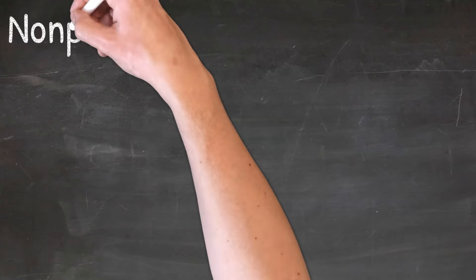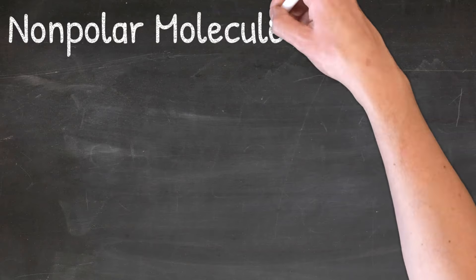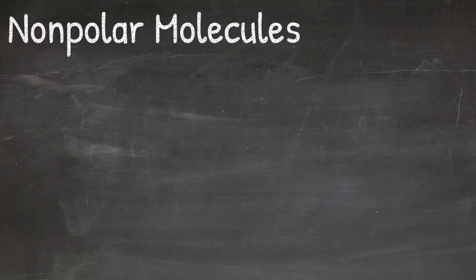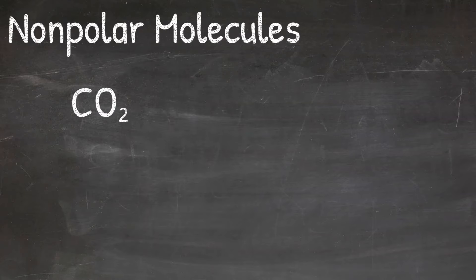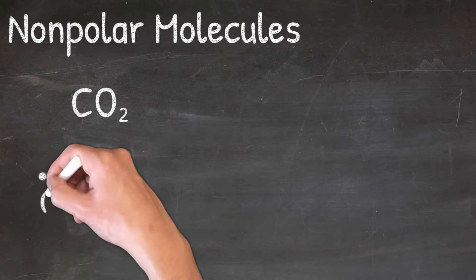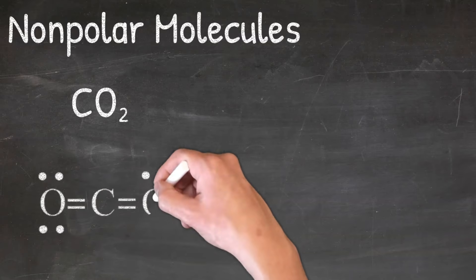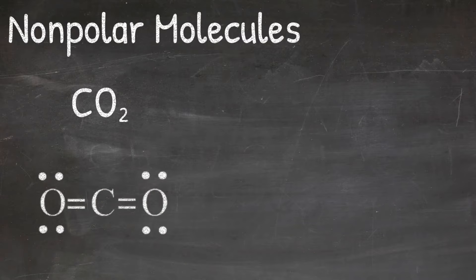We'll start by looking at a couple of examples for nonpolar molecules. In our first example, we will look at CO2. When determining whether a molecule is polar or nonpolar, we have to look at the Lewis structure for that molecule. So I'll put the Lewis structure for CO2 here.